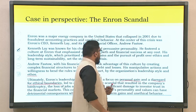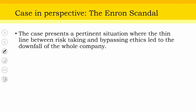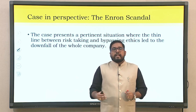Ultimately, Enron's leadership — characterized by a focus on personal gain and disregard for ethical boundaries — led to a massive corporate scandal resulting in the company's bankruptcy, loss of jobs and investments, and significant damage to investor trust in financial markets. The case presents a pertinent situation where the thin line between risk-taking and bypassing ethics led to the downfall of the whole company. Many times we tend to ignore ethics as not so relevant, but with the principles discussed in this lecture, we can appreciate that ethics is critical in establishing fair practice within an organization.